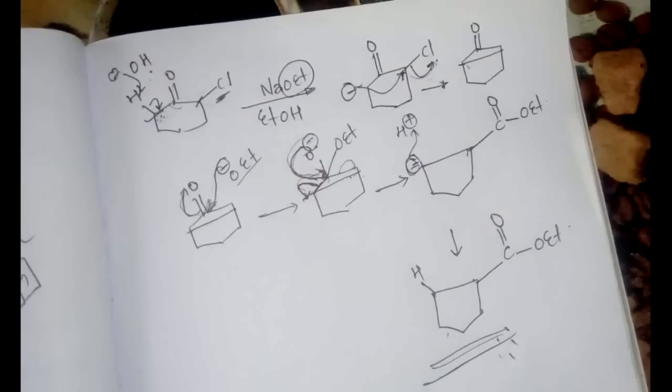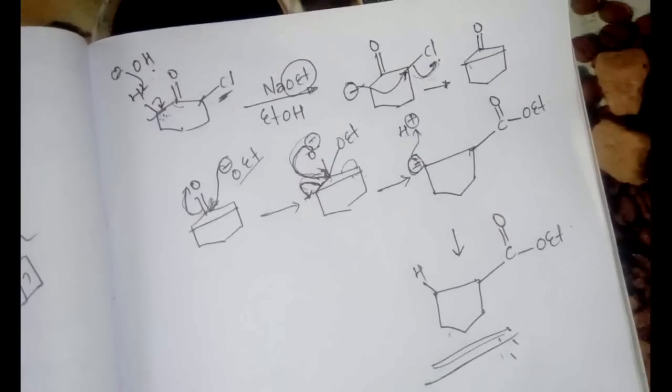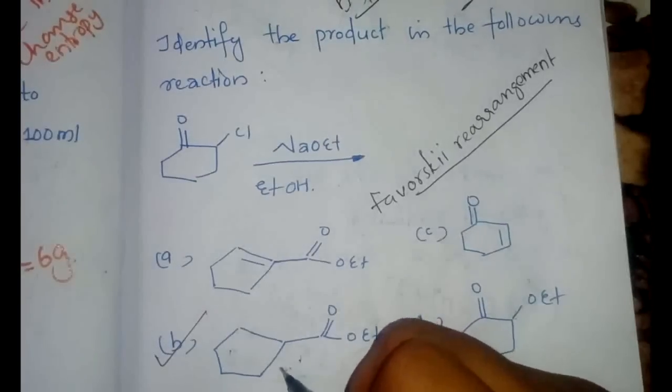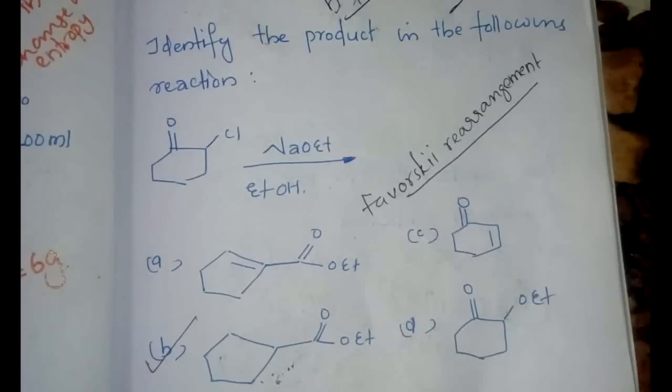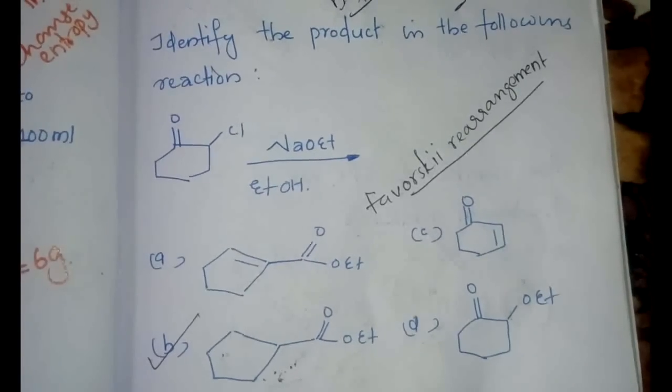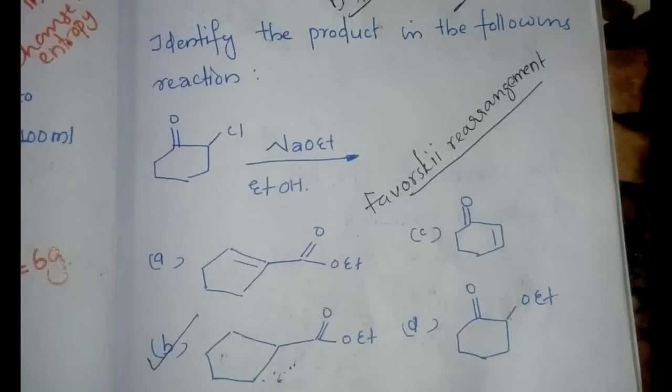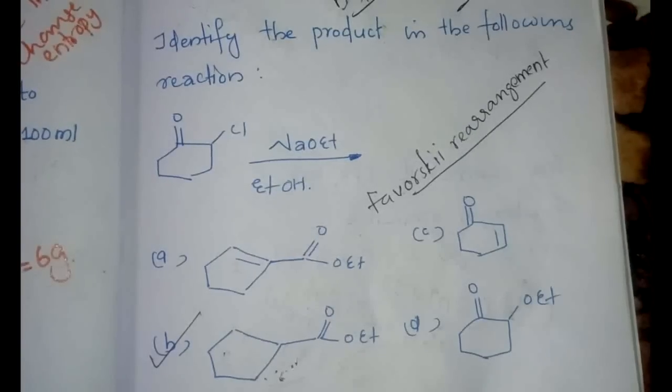Now let's see the options and if there is any option matching our answer. We can see yes option B is exactly the same product that we have found after doing the rearrangement reaction. In these kinds of questions please don't look at the options and waste your time. When you understand that this is a particular rearrangement, directly go and start writing the mechanism because it would be simpler than to simply waste the time by looking at the options.